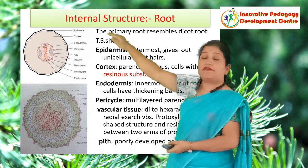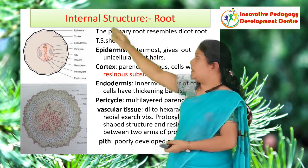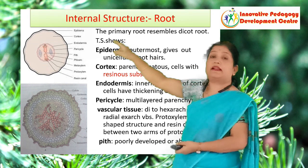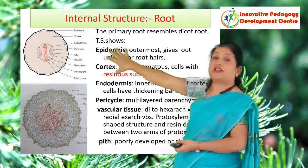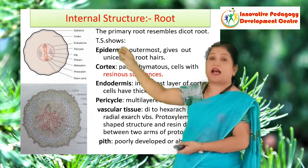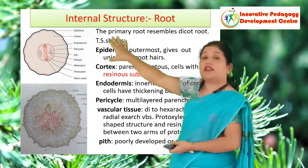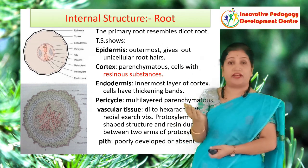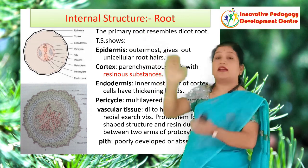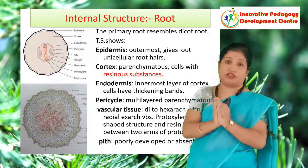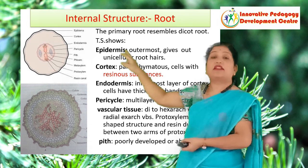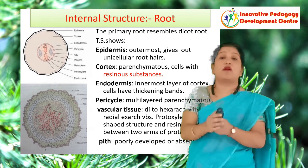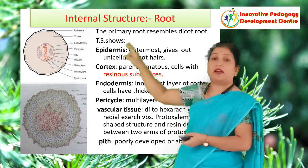Then there is a boundary of the vascular region represented by the endodermis, and the cells of the endodermis have thickening bands on their radial wall. The endodermis is followed by the multi-layered pericycle. Regarding the vascular region in the root, it is di- or hexarch — meaning two to six arches. The vascular bundles have xylem in hexarch condition: metaxylem in the center and protoxylem toward the periphery. The bundles in the root are radial, meaning the xylem strands and phloem strands alternate with each other. Importantly, the protoxylem forms a Y-shaped structure, and the resin duct is present between the two arms of this Y-shaped structure.